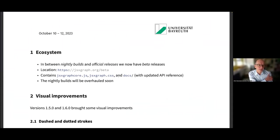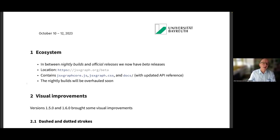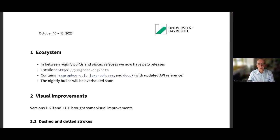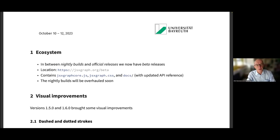This summer, we started to release beta versions — something between nightly builds and official releases — and they are located at JSXGraph.org/beta. There's always JSXGraph.js, JSXGraph.css, and a folder docs with the updated API reference. Additionally, there's a JSXGraph.mjs if you want to include it as an ES6 module.